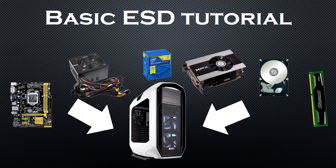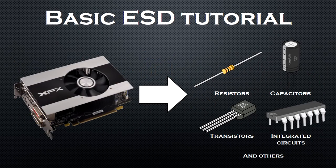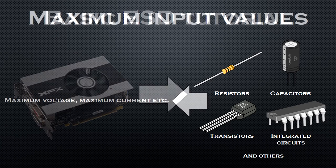Every major component in your PC is composed of various electronic components like resistors, capacitors, transistors, integrated circuits, and many others.